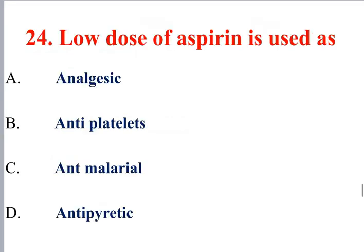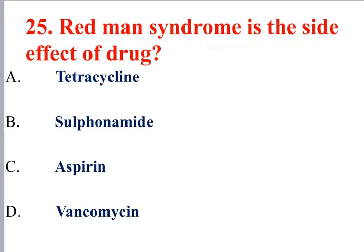Question 24: Low dose of aspirin (75–150 mg) is used as an anti-platelet agent. High-dose aspirin is used as an antipyretic and analgesic. Red man's syndrome is a rare side effect, and aspirin can also cause discolouration of teeth in some contexts.